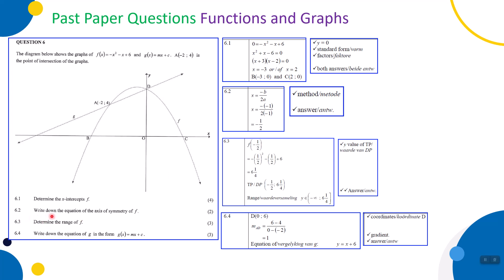6.2: write down the equation of the axis of symmetry of f. You can find halfway between the x-intercepts, or use the formula x = -b/(2a). Here b = -1 and a = -1, so x = -(-1)/(2×-1) = -1/2. The axis of symmetry is x = -1/2 — a vertical line through the parabola. One mark for the method and one mark for the answer.